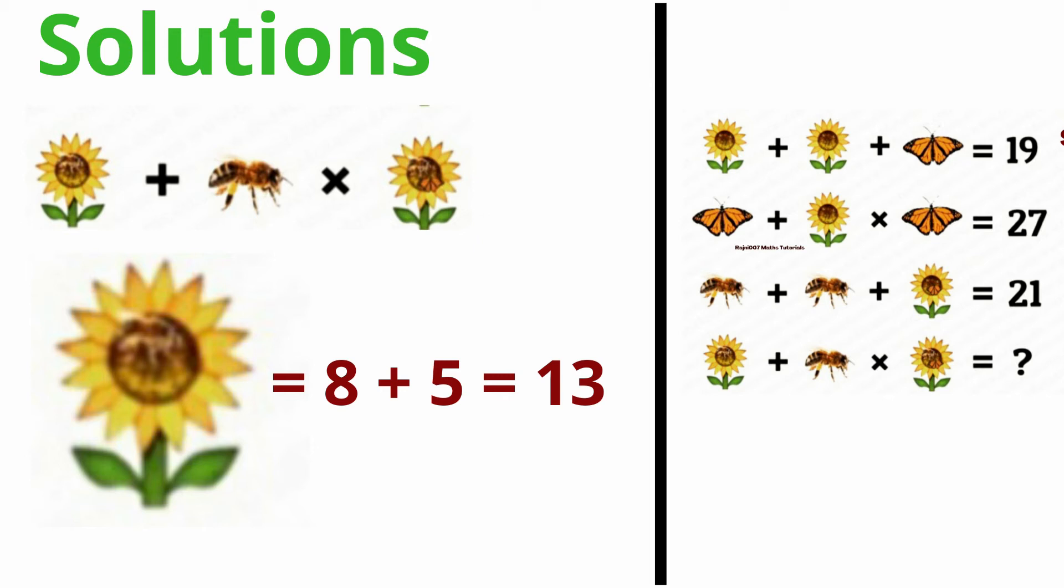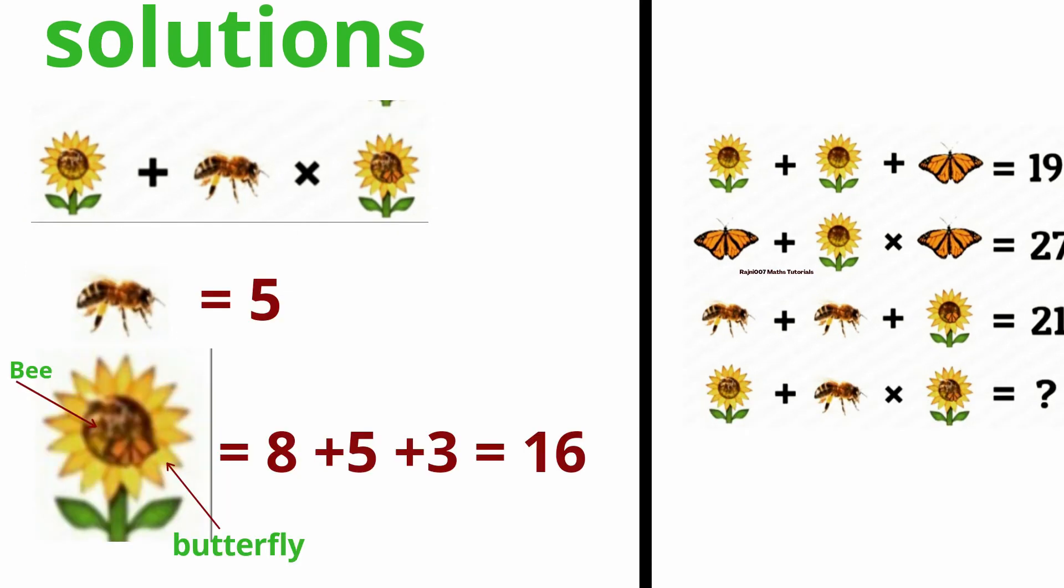Final solution, you can see in the first picture there is a honey bee also in the sunflower, so this value is 8 plus 5 is 13. Next is a single honey bee, which is a sunflower, which is a bee and a butterfly, so this value is 8 plus 5 plus 3 is equal to 16. All equations have got, all values have got. What is the final solution?